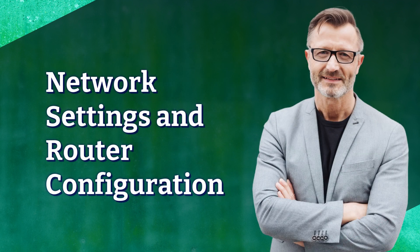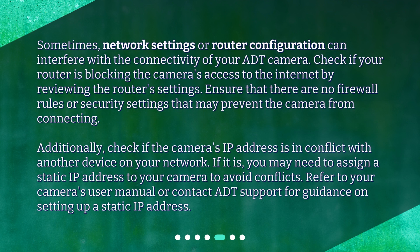Network Settings and Router Configuration. Sometimes, network settings or router configuration can interfere with the connectivity of your ADT camera. Check if your router is blocking the camera's access to the internet by reviewing the router's settings. Ensure that there are no firewall rules or security settings that may prevent the camera from connecting. Additionally, check if the camera's IP address is in conflict with another device on your network. If it is, you may need to assign a static IP address to your camera to avoid conflicts. Refer to your camera's user manual or contact ADT Support for guidance on setting up a static IP address.